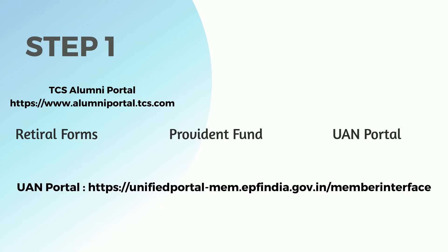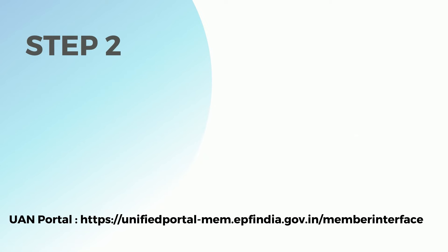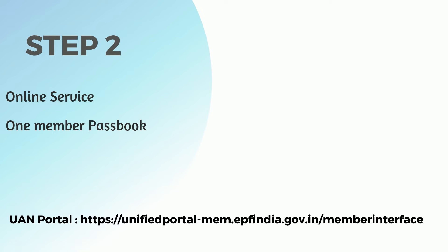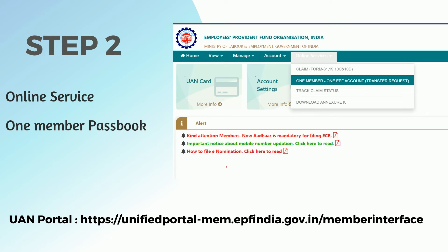You will also get further clarification about the steps in this section under Provident Fund. Step 2: Once you visit the UAN portal, you have to go to Online Services and then select One Member Passbook. You have to select Online Services as mentioned, then click on One Member Passbook. This is the homepage of the UAN portal.